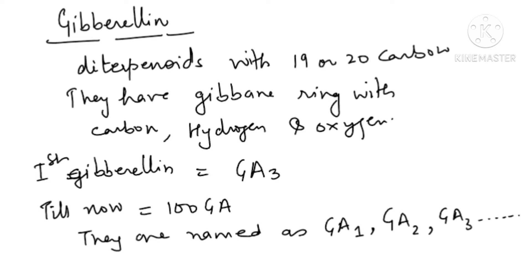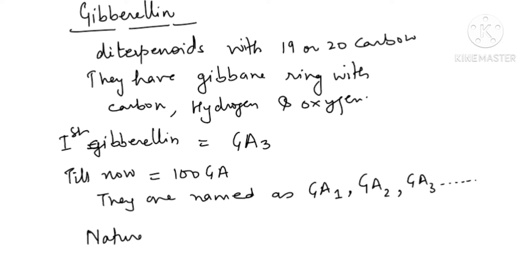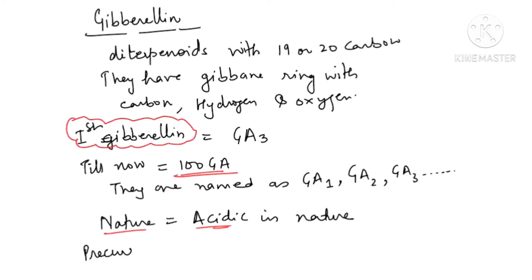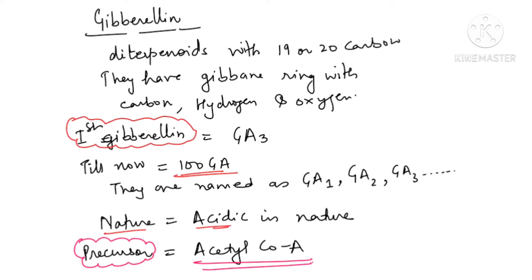Their nature is acidic. The first Gibberellin acid is GA3, and till now 100 Gibberellin acids have been isolated. The precursor for Gibberellic acid is Acetyl Coenzyme A — this is important. Acetyl Coenzyme A is the precursor from which we can make Gibberellic acid.